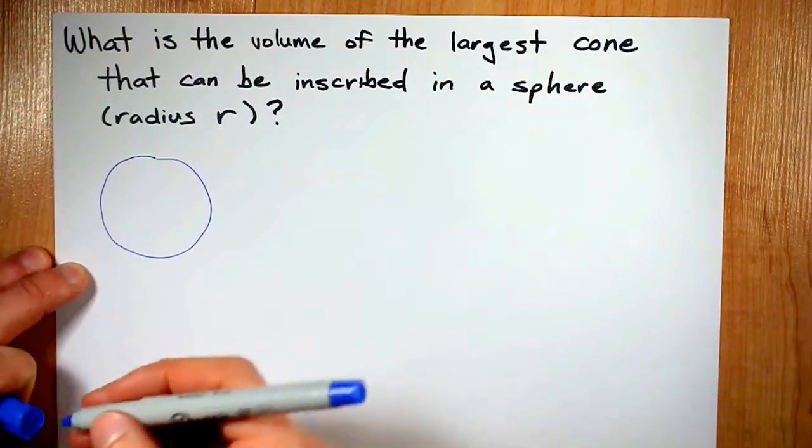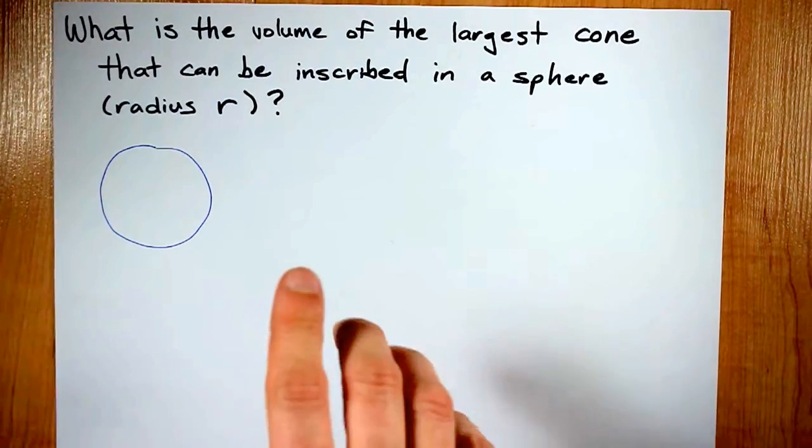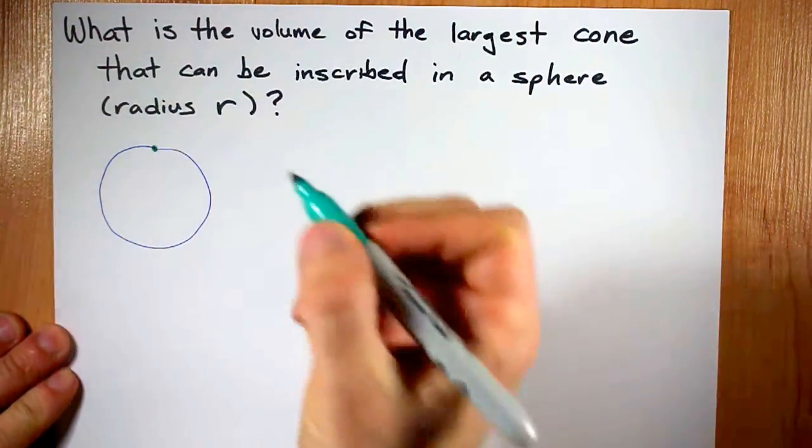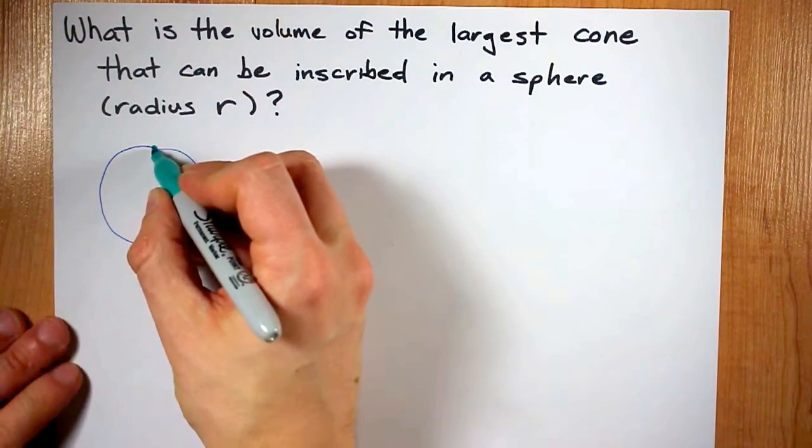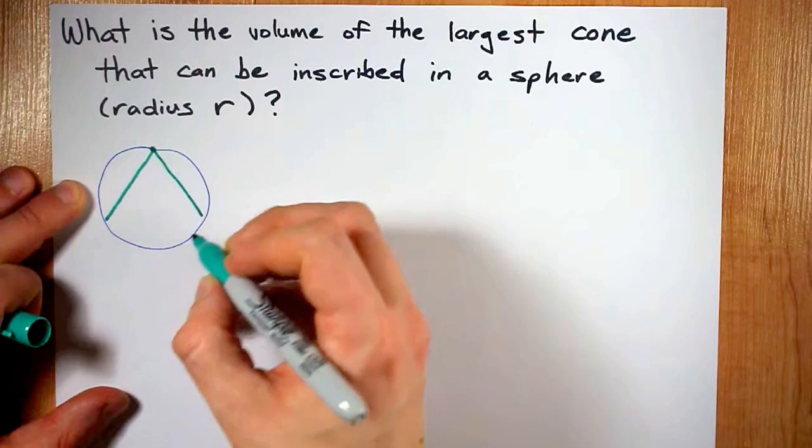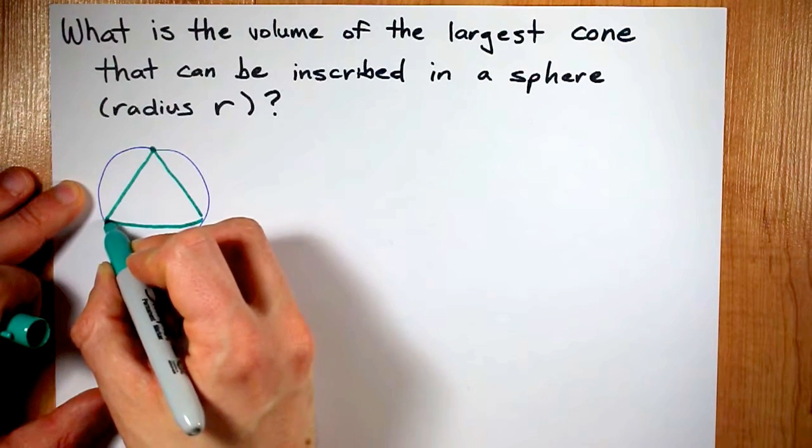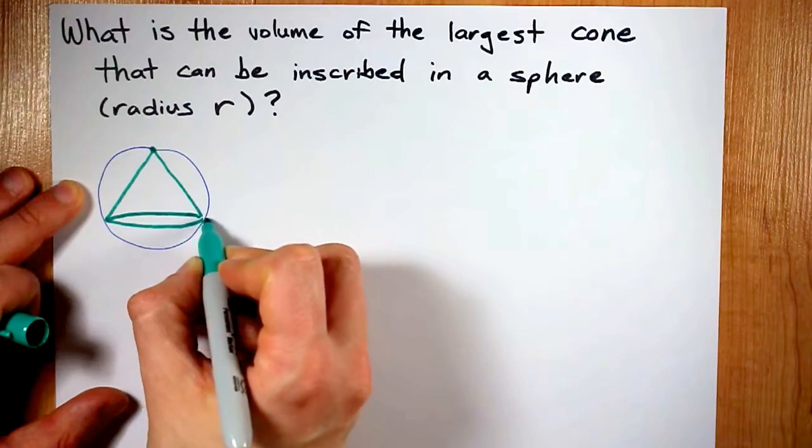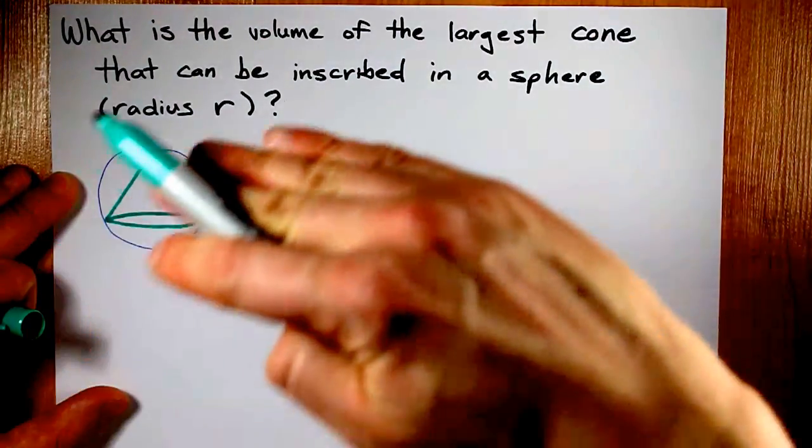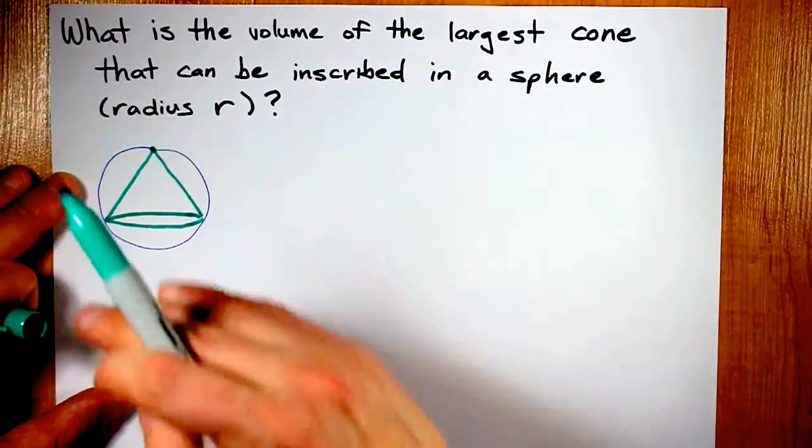Here's the sphere. The cone, or at least the tip of the cone, is going to have to be at one corner of the sphere. Then it's going to come down on two diagonals, and then around the sphere, you're going to have the base of the cone. That base of the cone is like a cross-section of the sphere right through there.